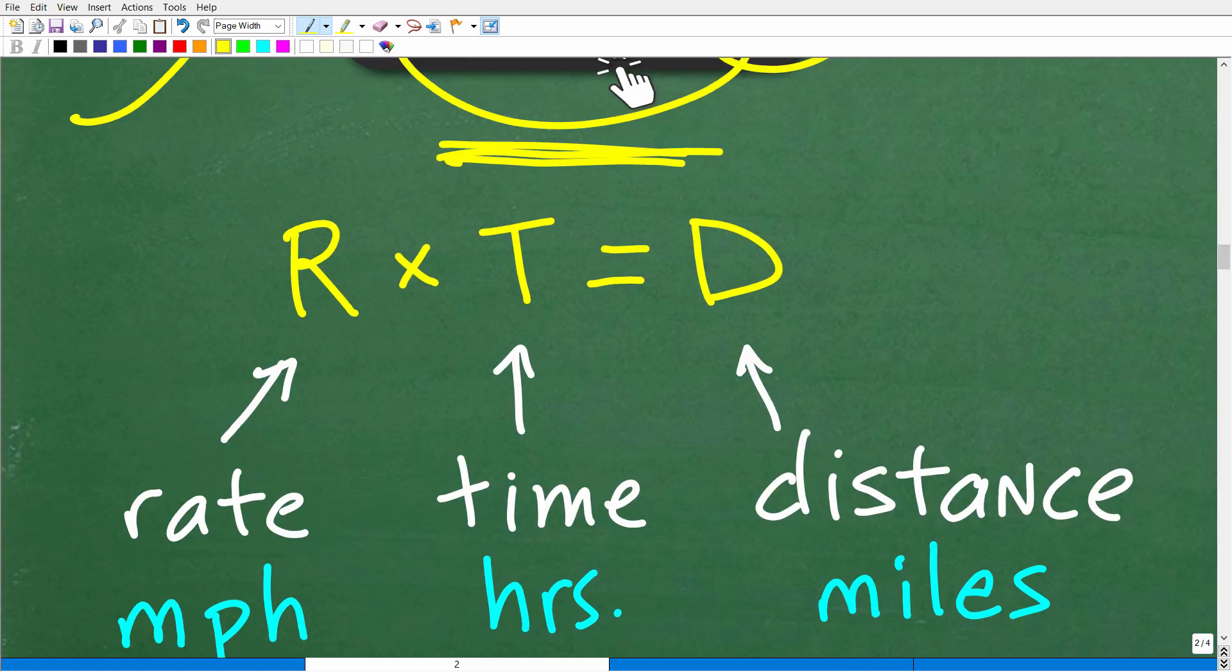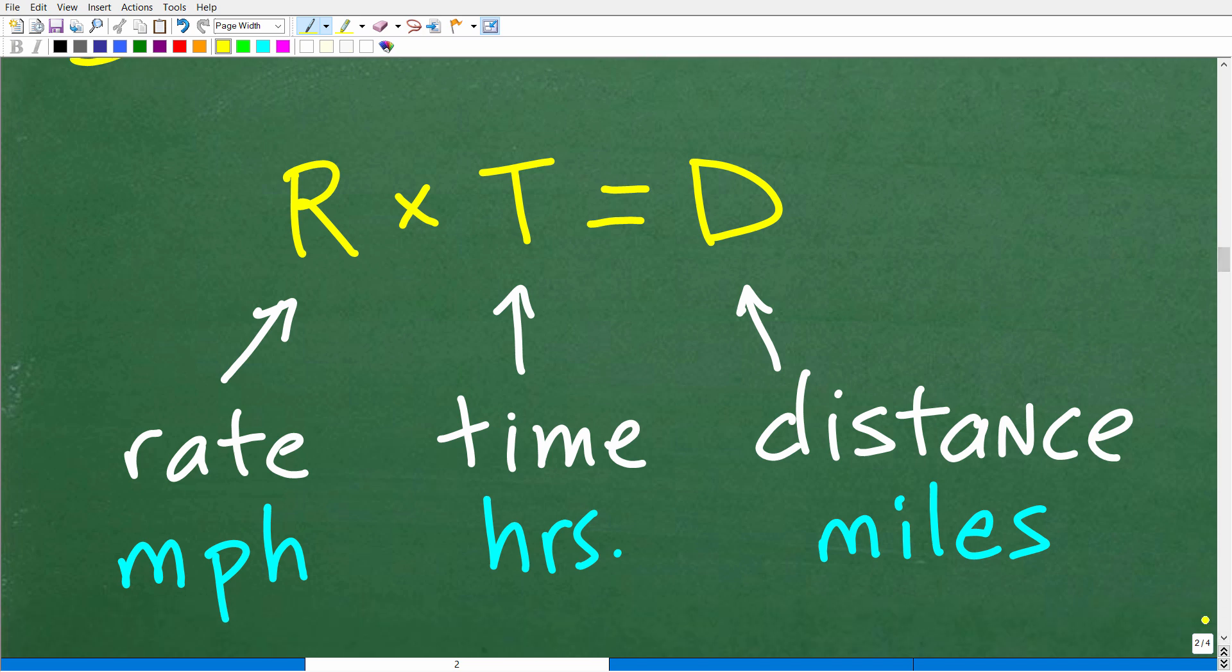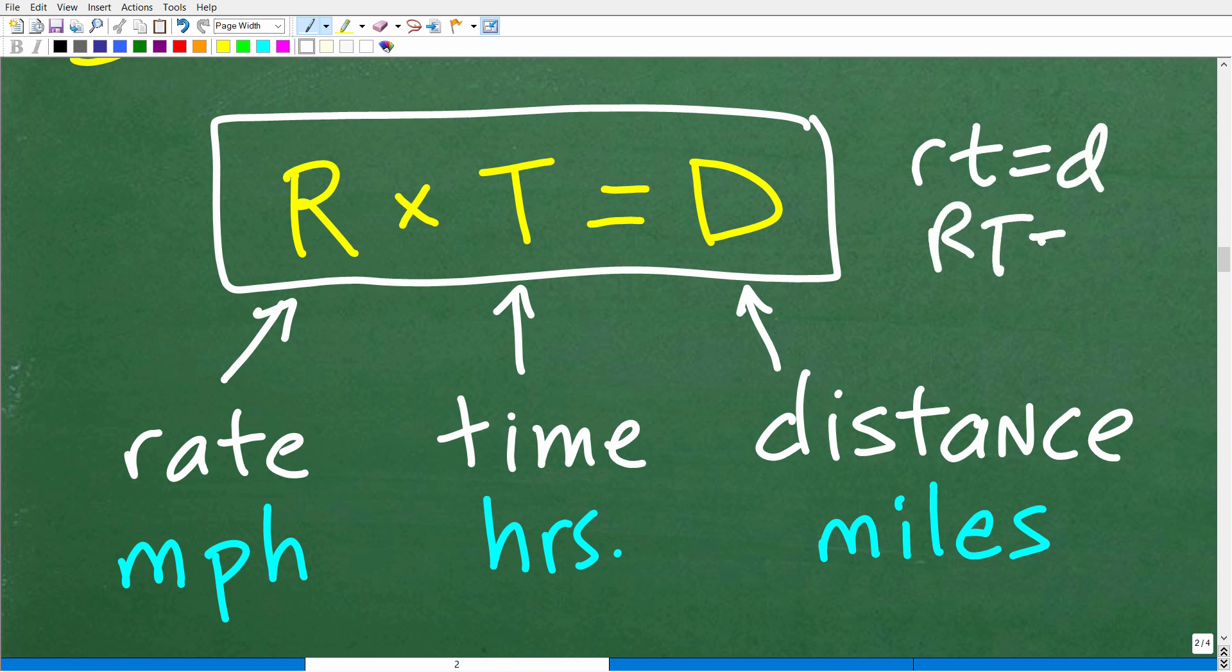All right, so here is this formula that you're going to want to know. This is an extremely important formula. It's used in math. It's used in science. But here it is. Let me go ahead and explain this to you. So it's R times T is equal to D. You can kind of see it this way. RT is equal to D or R times T is equal to D. So what is this R, T and D? Well, let me go ahead and explain this to you right now.